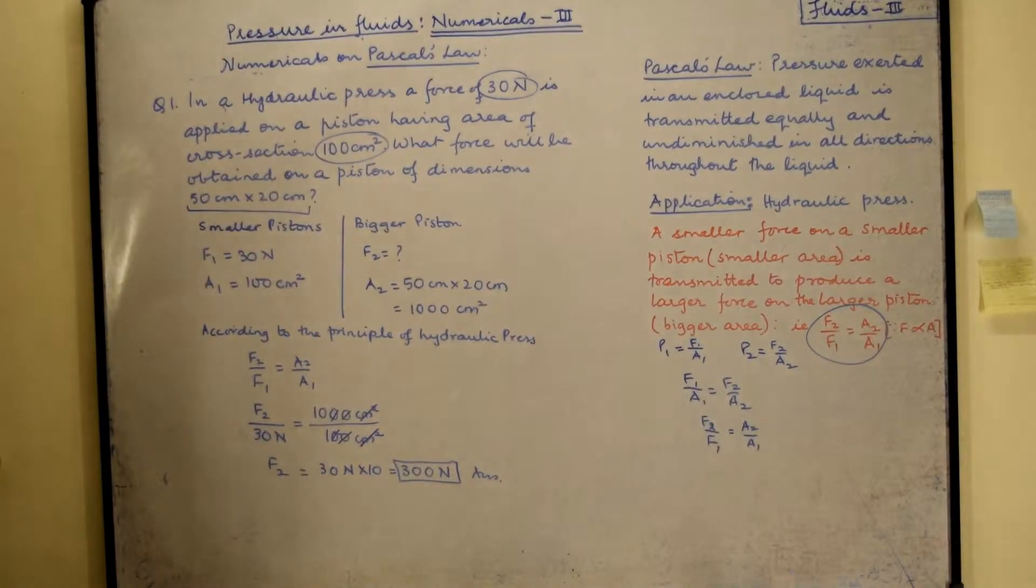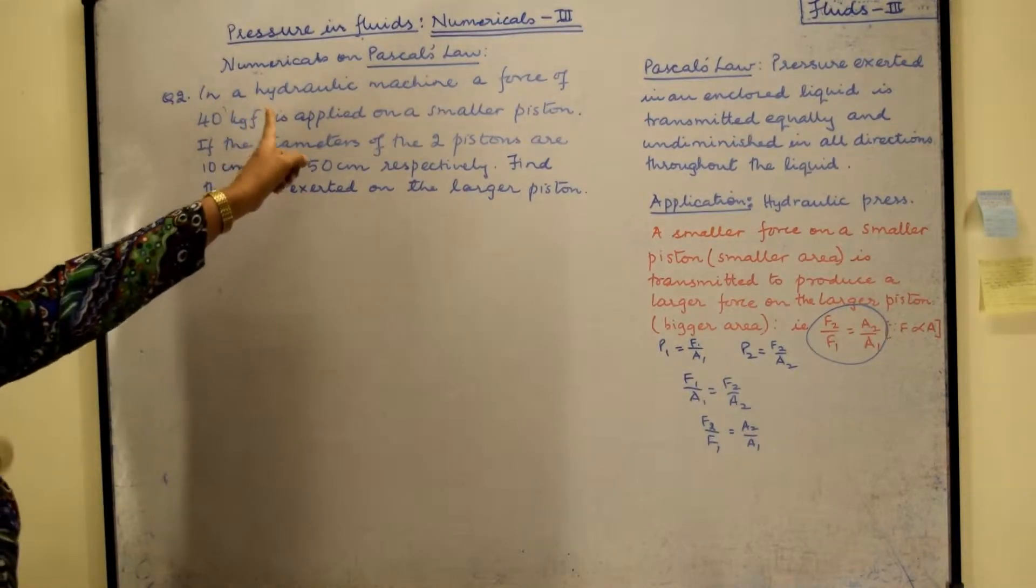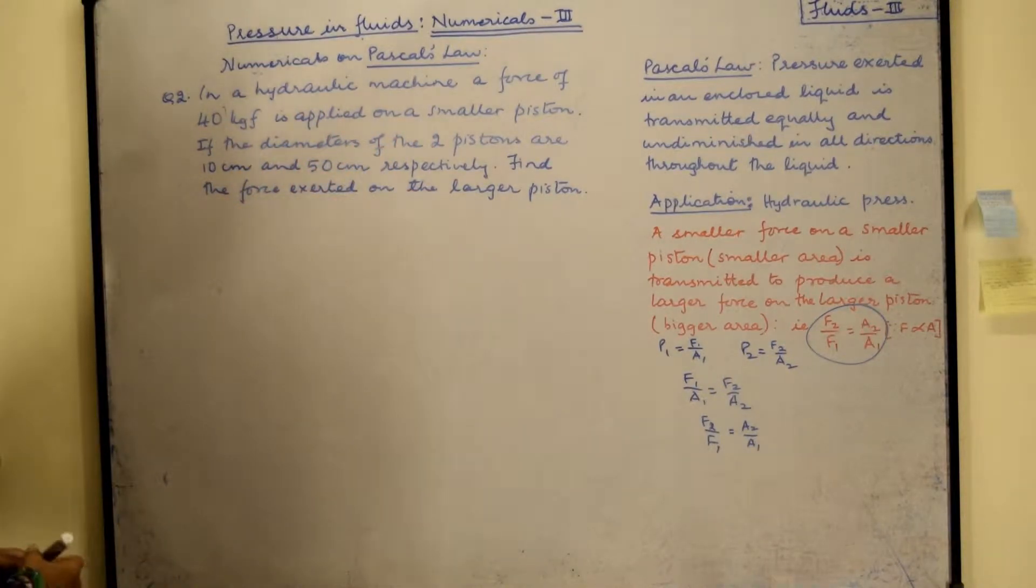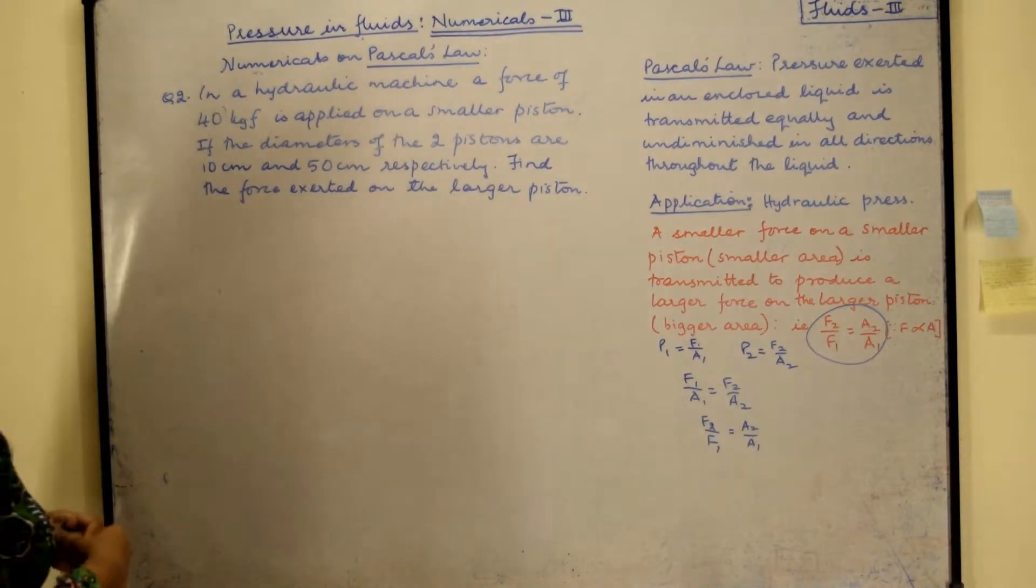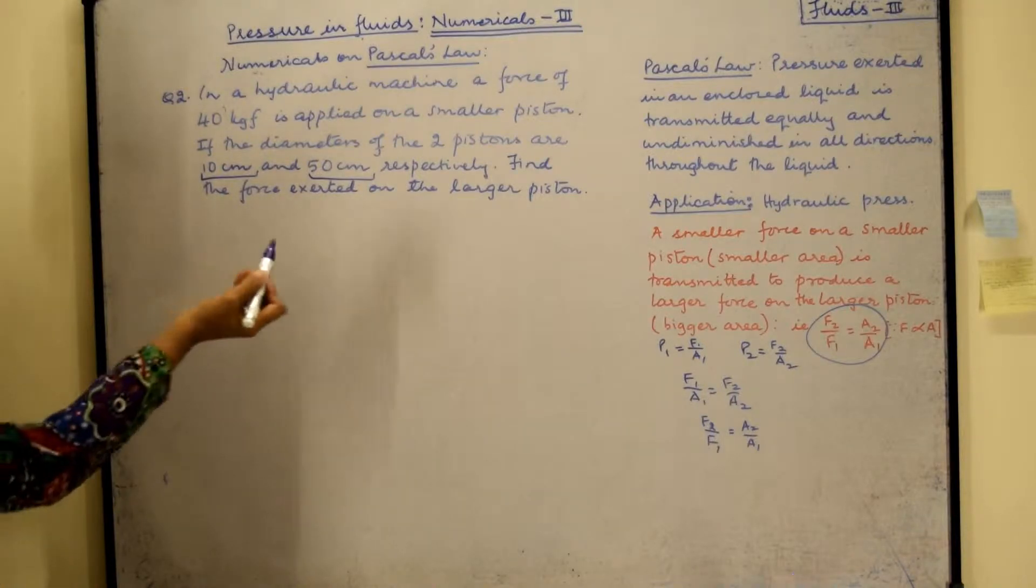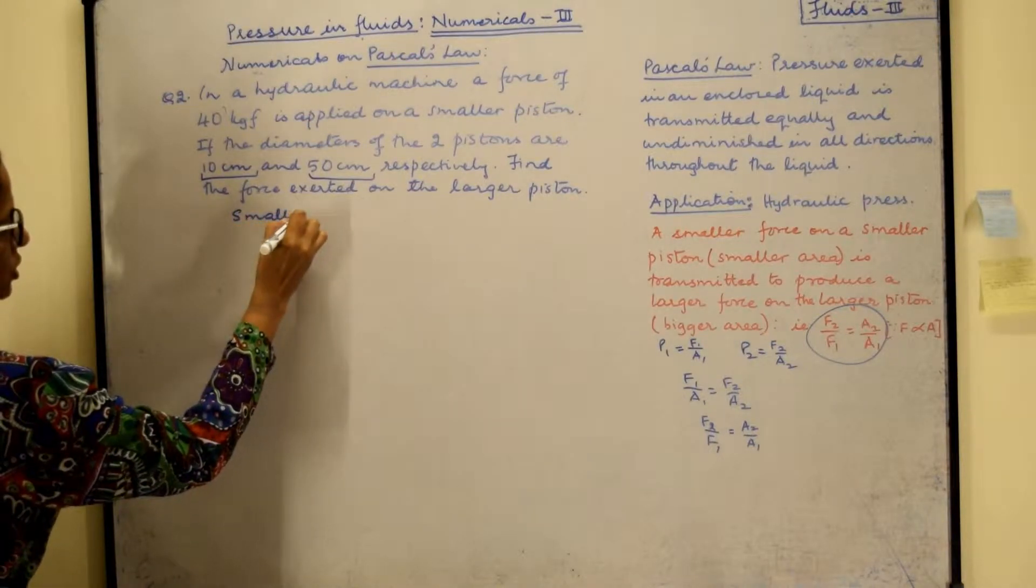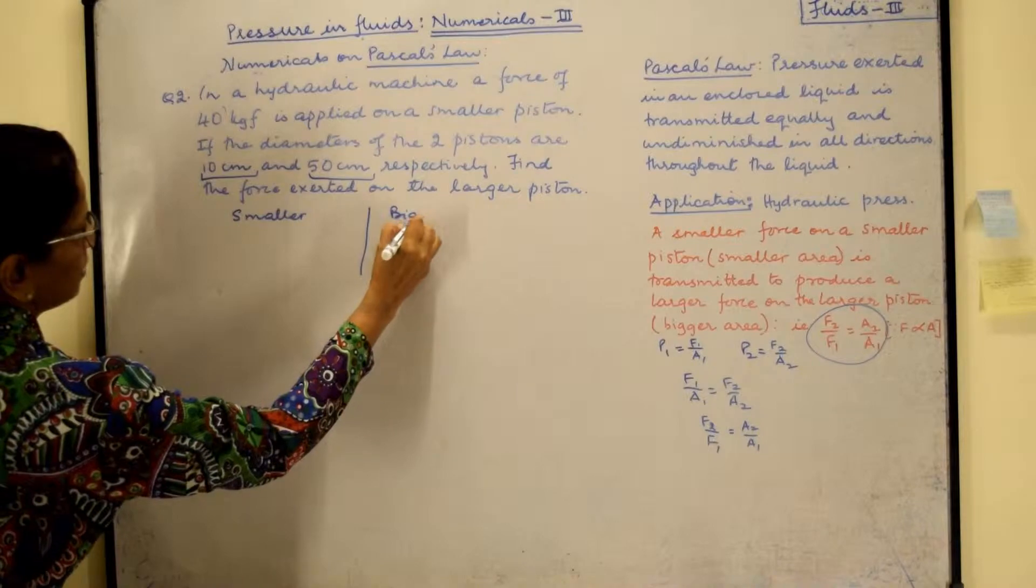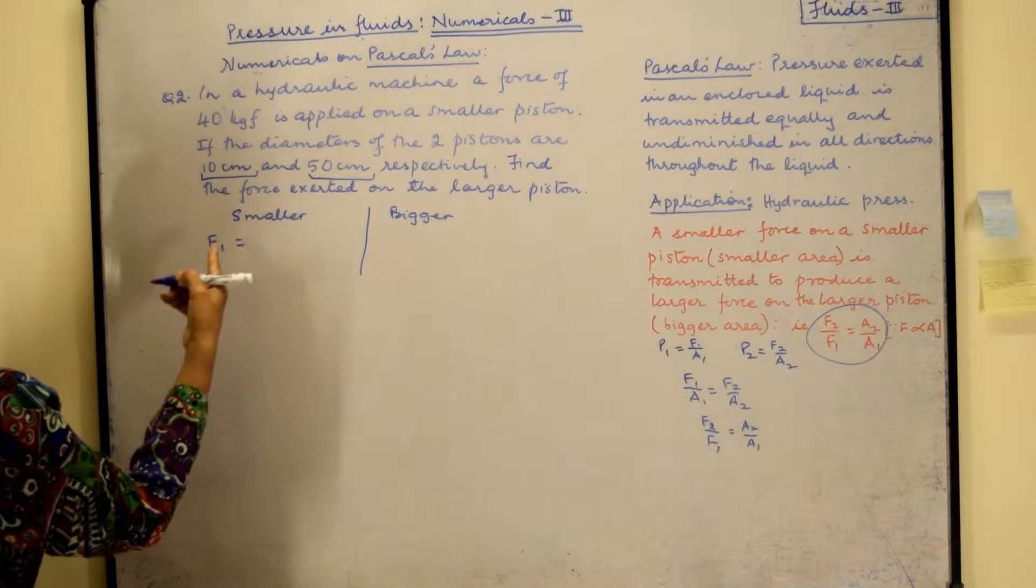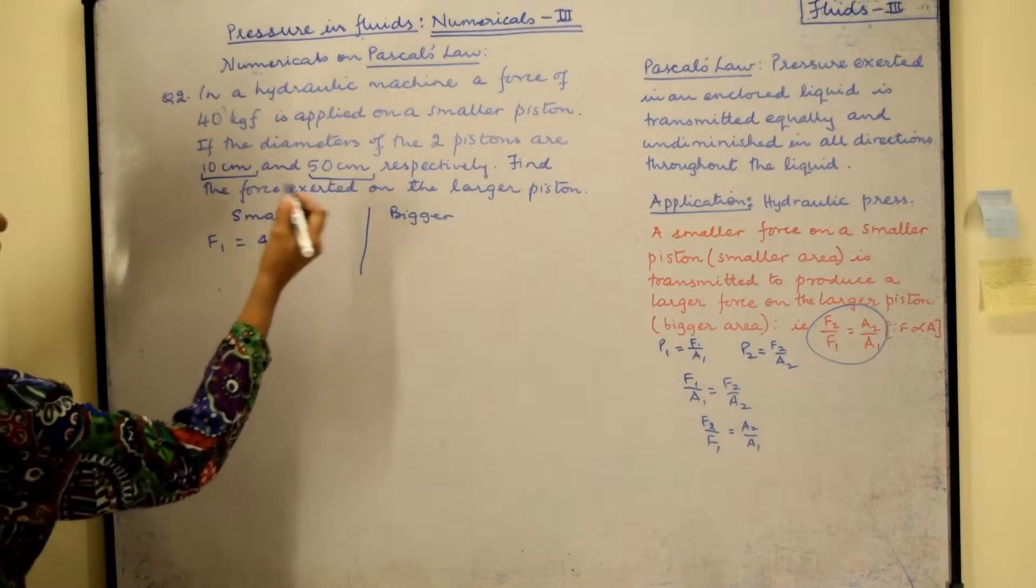Now let us move on to question number 2. So in the second question there is a hydraulic machine and a force of 40 kgf is applied on the smaller piston. The diameters of the two pistons are 10 centimeters and 50 centimeters respectively. We have to find the force exerted on the larger piston. So as we did for the earlier question we have the smaller piston and we have the bigger piston. And the force applied on the smaller one is F1 which is given as 40 kgf.